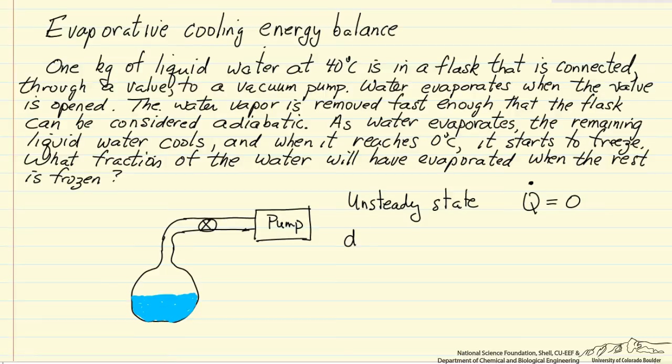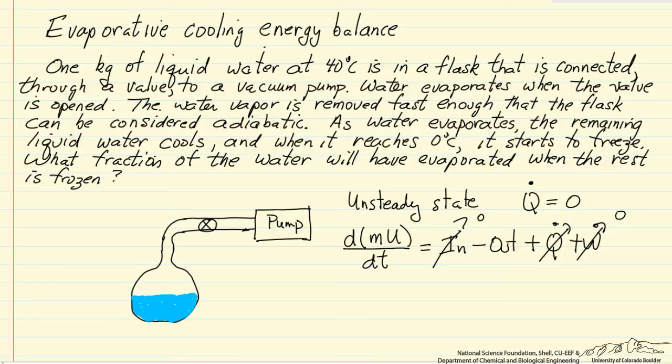So if we write the first law as the derivative of the total energy in the system, I will write that as a mass times the internal energy per kilogram. How that changes with time, well in the general form we add energy by flow, we have energy removed by flow, heat added, work. These terms are zero, this term is zero, the only term left is the energy being removed.